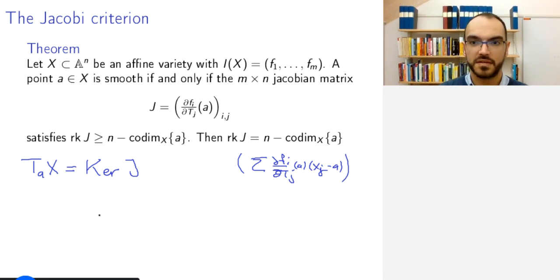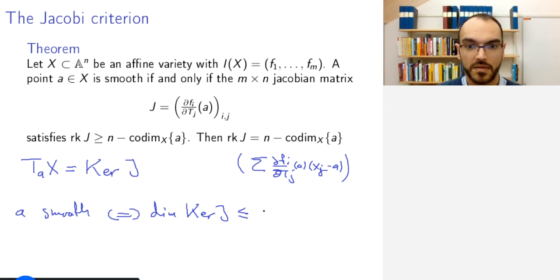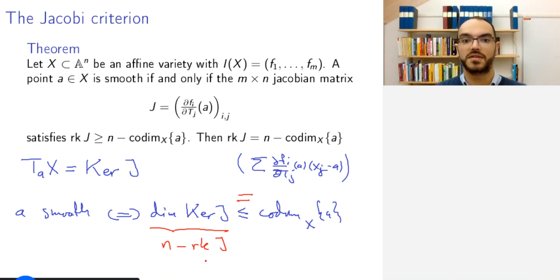So, the tangent space is the kernel. So, the requirement by definition of smoothness, well, so we know that the dimension of this thing is always at least the co-dimension. So, for smoothness, we need it to be equal or what is equivalent at most the co-dimension of a. So, a is smooth if and only if the dimension of the kernel of J is at least the co-dimension in X of a. And you can also put equality. So, at most this dimension. So, you can put equality or you can say at most. And this is exactly N minus the rank of J from linear algebra. And so, rearranging, you get the equalities that we need.